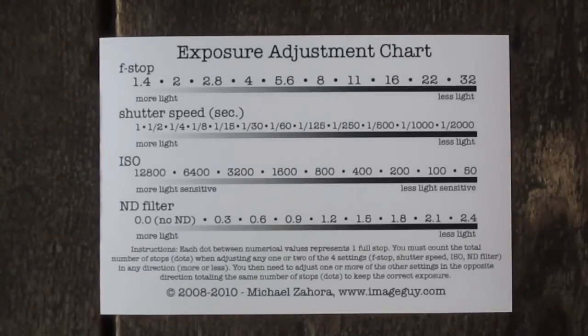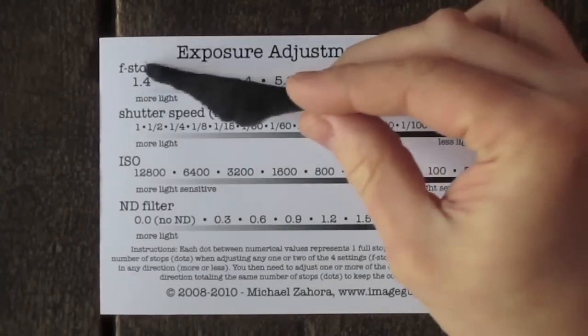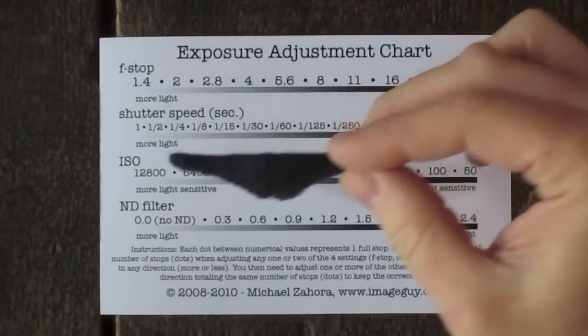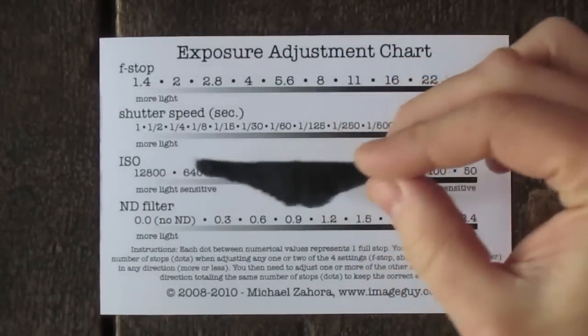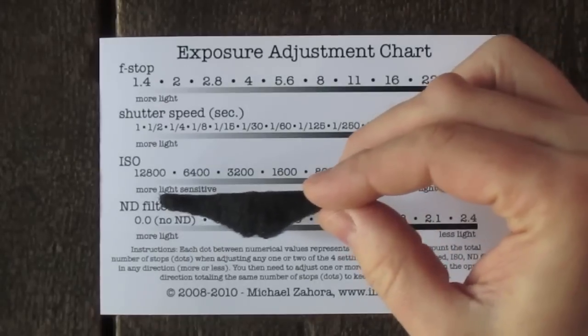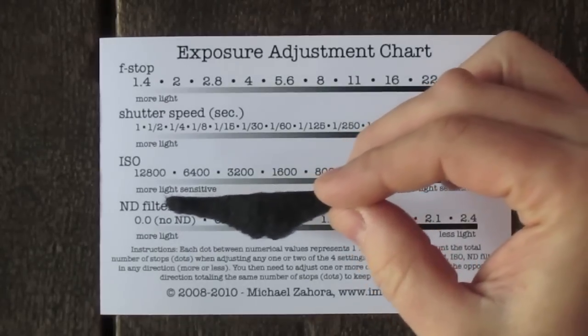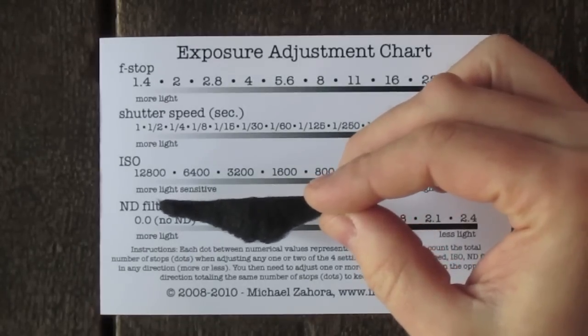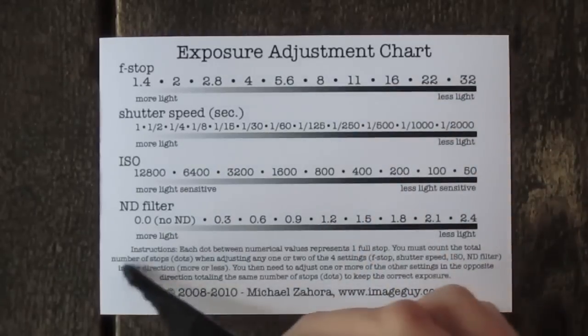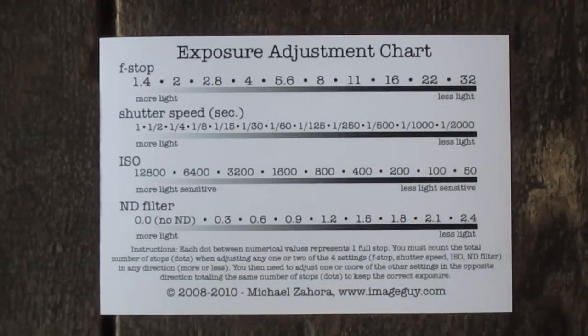Let's take a look at the new exposure adjustment chart. We've got f-stop, shutter speed, ISO, and ND filter — neutral density filter — and we've got the instructions underneath on how to use the chart. It's pretty simple.